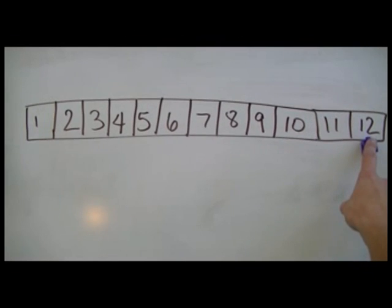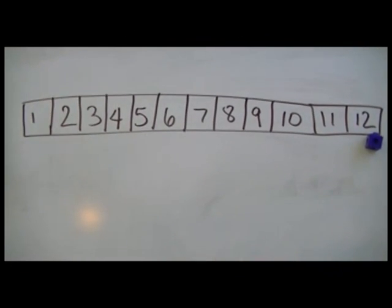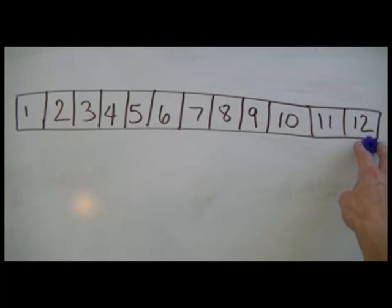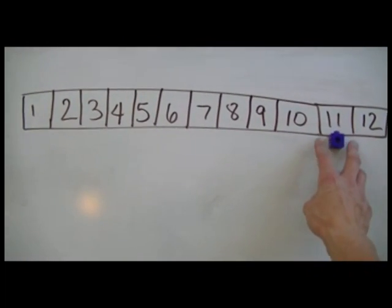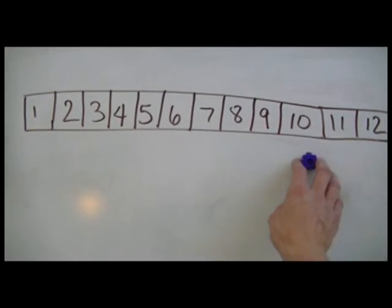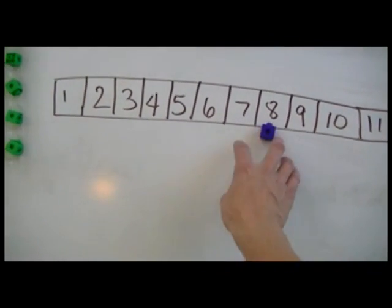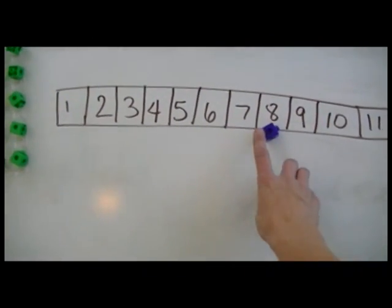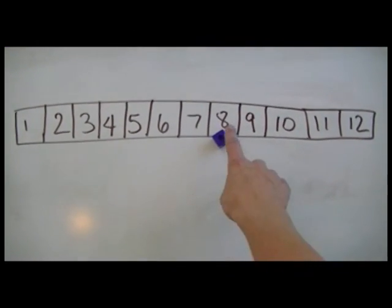Remember, you don't say 12. The first number you say is you have to jump to 11. So if I do 12 minus 4, I'm gonna go 1, 2, 3, 4. So 12 minus 4 is 8.